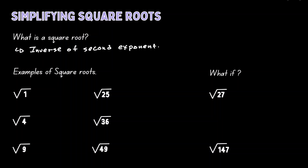So what do we mean by that? Let's say that we have a number, let's call it 3. If we raise that number to the second exponent, we're going to get 9. But if we take the square root of 9, we're going to go back to 3. And this is what we mean by being the inverse of the second exponent.